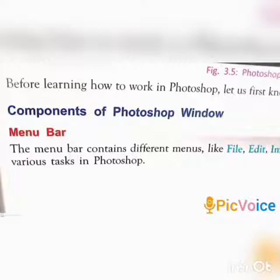The six major elements of the Photoshop window are: first, the Menu bar; second, the Options bar; third, Default mode; fourth, Palette; fifth, Document area; and sixth, the Tools panel.